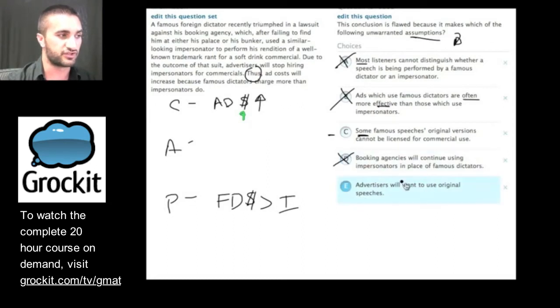So let's take a look at E. Advertisers will want to use original speeches. So original speeches done by the actual famous dictator. So I have these two answer choices. I know that one of them must be true for the argument to make sense. It's the assumption. And we can test it by negating it. So let's negate E. E says advertisers will want to use original speeches. So if we negate it, we would say advertisers will not want to use original speeches. Well, if it's true that advertisers will not want to use original speeches, then they can just use impersonators and ad costs won't go up. So when I negate this answer choice, it seems like the argument falls apart.